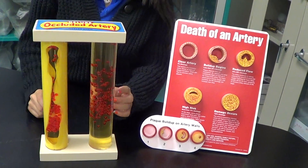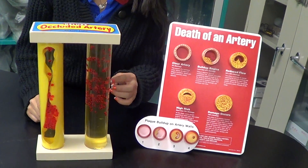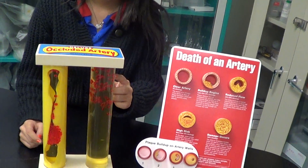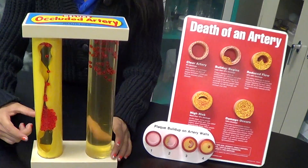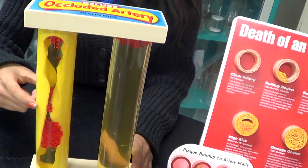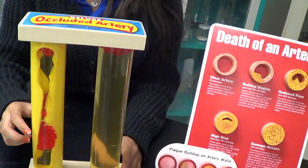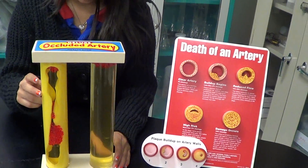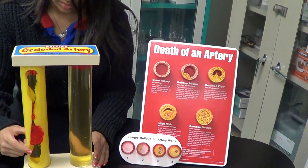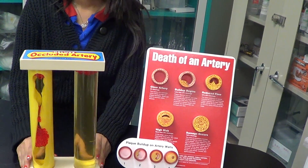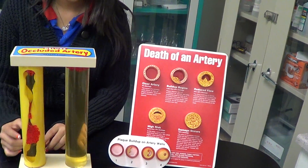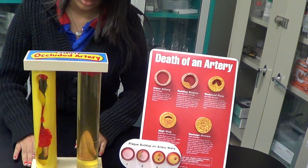As you can see, the red blood cells in the healthy artery are easily flowing up, while the red blood cells in the artery with high cholesterol are having trouble moving up and are even stuck within the artery. That's because the artery with high cholesterol has arterial plaque.